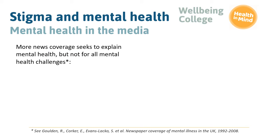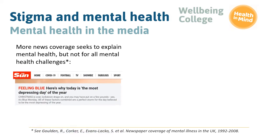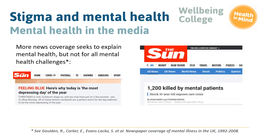We can also see how attitudes towards mental health have been influenced by the media. Whilst there is more news coverage aimed at explaining mental health problems, this is not true for all diagnoses. As a glance at some newspaper headlines can show, there is now more awareness and acceptance of challenges like depression and anxiety, which are perhaps more relatable, whilst people with other serious mental health challenges are still associated with violence. The second article states that mentally ill people are up to 10 times more likely to become a victim of crime than the average person. However, this is not apparent from the headline, which may be all that some people read.